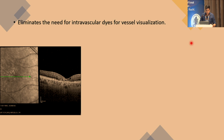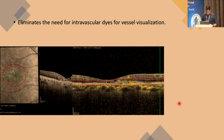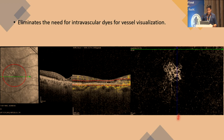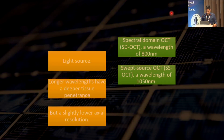OCTA eliminates the need for intravascular dye for vessel visualization. In one diagram showing four-layer thinning with atrophy and loss of outer retinal layer, just noticing scans over time reveals a beautiful vascular network that could easily be missed on plain OCT scans. The light source can be spectral domain at 800 nm wavelength or swept source at 1050 nm — longer wavelength gives deeper tissue penetration but slightly lower axial resolution.